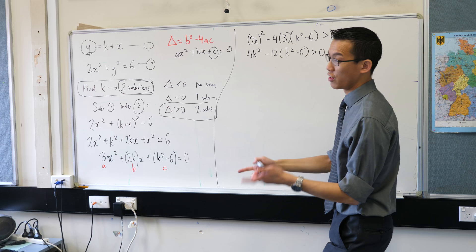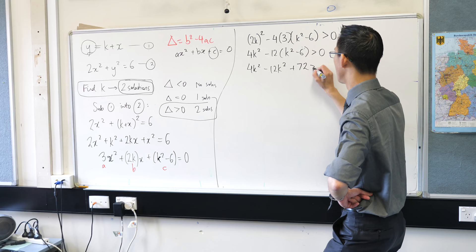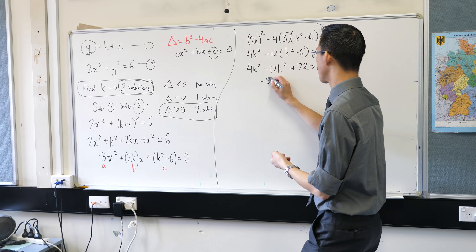Now I'm just going to watch out for this double negative. There's 4k squared here, take away 12k squared plus 72. That looks good. Collect like terms, so minus 8k squared.